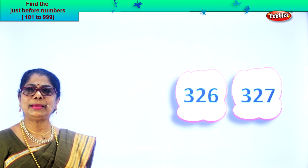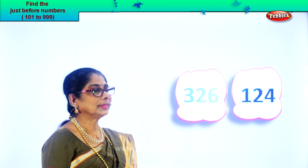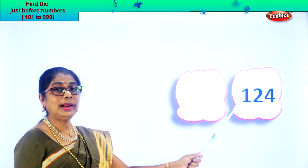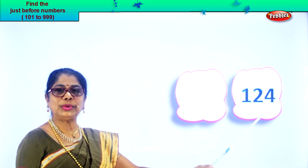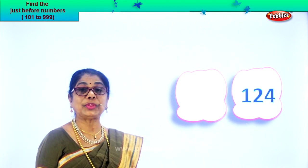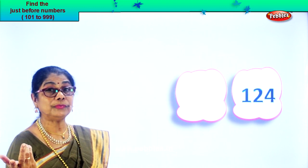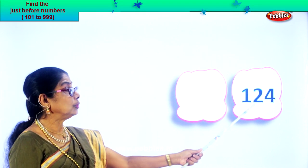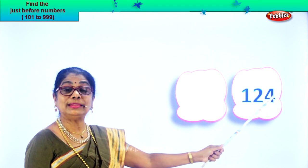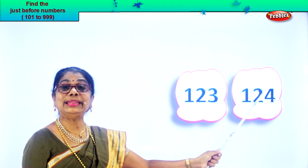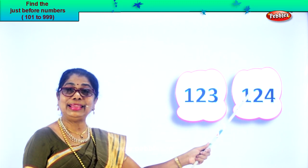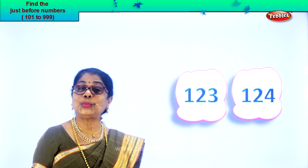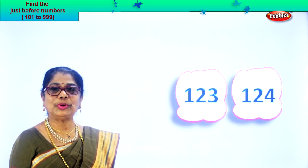Let's go on to another number — one hundred and twenty-four. Four in the ones place, two in the tens, and one in the hundreds place. Ones place you have four. What is one less than four? Three. So twenty-four, one less is twenty-three. One hundred and twenty-three is the number before. One hundred and twenty-three, one hundred and twenty-four.